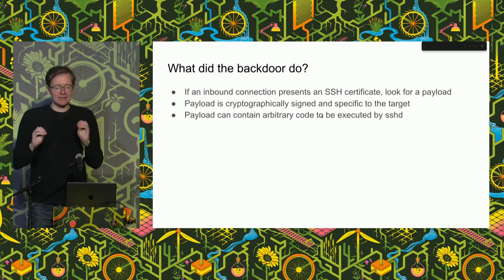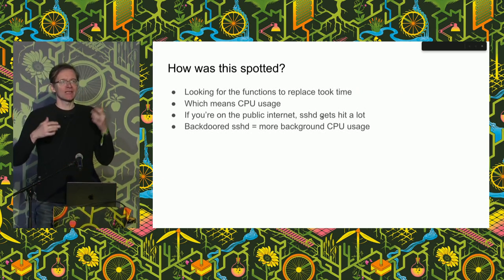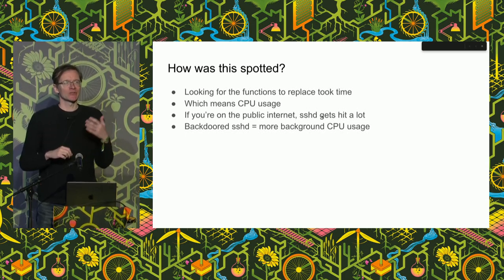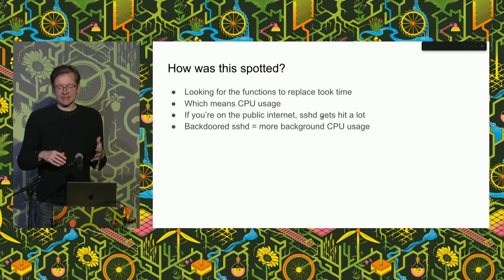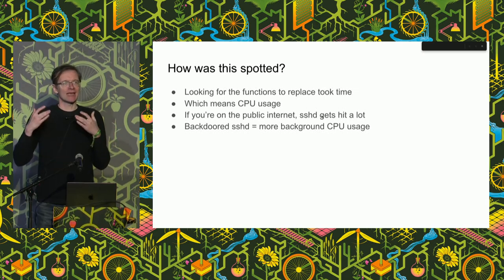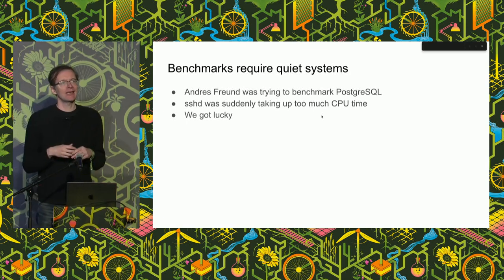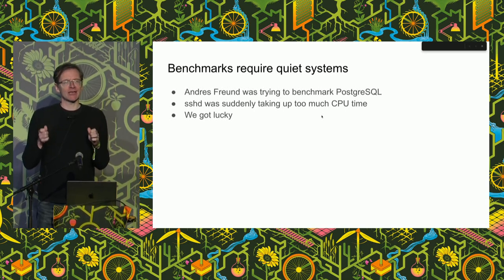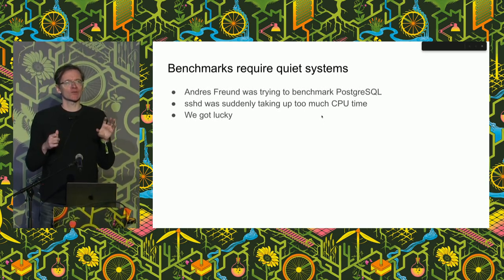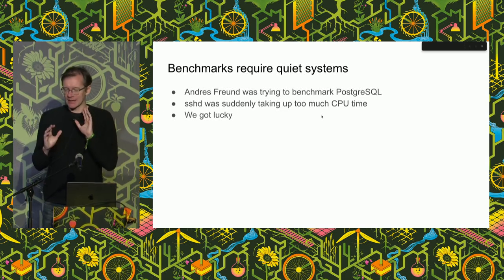The function that does the lookups to see whether rsa_public_decrypt is there was not implemented in a particularly ideal way, which means CPU usage. Those of you who have run a system on the public internet have probably seen that you get a lot of traffic rejecting SSH login attempts every second. Backdooring sshd means more background CPU usage, because every time a new sshd is spun up to handle an incoming connection, the backdoor is loaded again — and that takes about half a second. So a developer called Andres Freund was trying to benchmark PostgreSQL and was noticing that his benchmarks were unstable — running the same benchmark more than once took differing amounts of time. And then he noticed this was because sshd was taking a lot of CPU time in the background, which meant his system wasn't quiet enough for his benchmarks to be reliable.